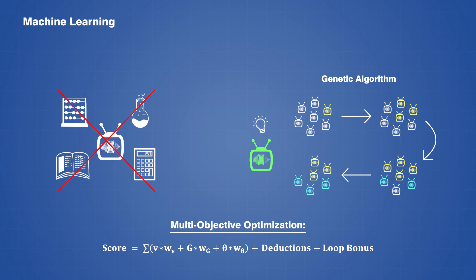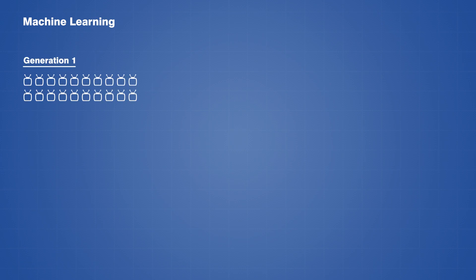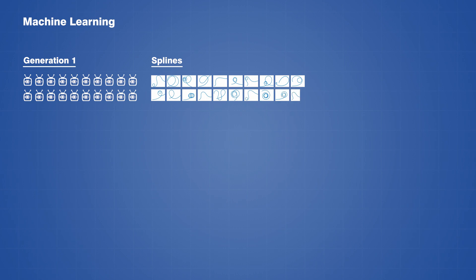To start the machine learning process, we first select the number of bots that we want to have in our population, and for each one, we generate a neural network with completely random weights and biases. We then allow each bot to create its own track spline using some given input parameters and constraints, and these are passed through the physics engine and rating system so that each design receives a score.